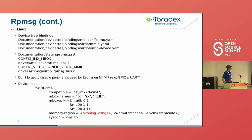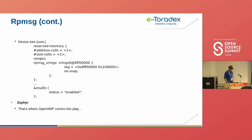In the device tree, the iMX7DCM4 node can also have additional nodes and properties for RP message — for example, giving it the mailbox names: tx, rx, rxdb, and allocating which mailboxes are used, which are handles to the MU hardware. In the memory regions you additionally have to add the RP message vring buffers. The MUs that are referenced must be enabled in the device tree by setting their status to enabled. Configs needed are CONFIG_IMX_MBOX, CONFIG_VIRTIO, and CONFIG_VIRTIO_MMIO.